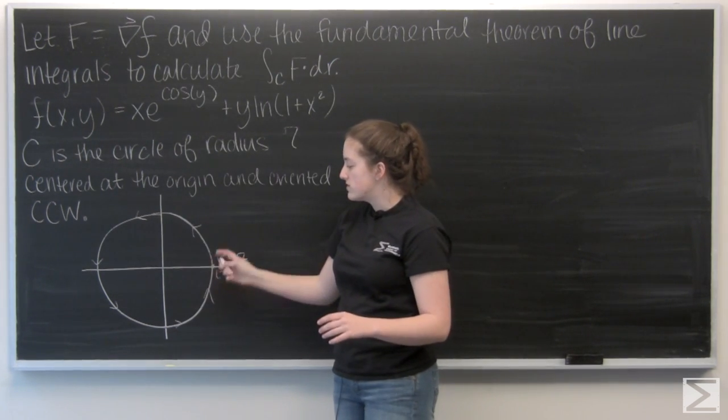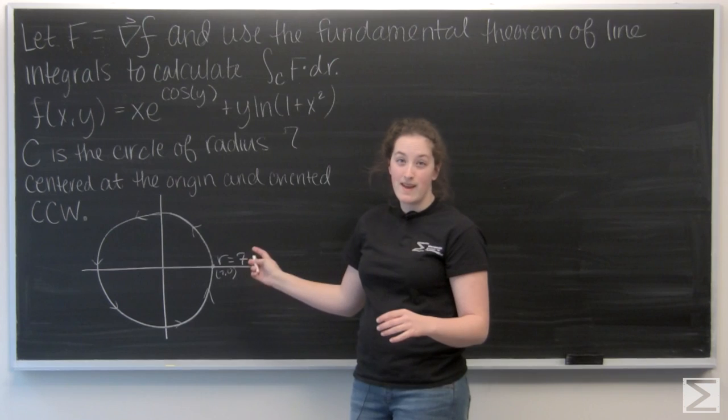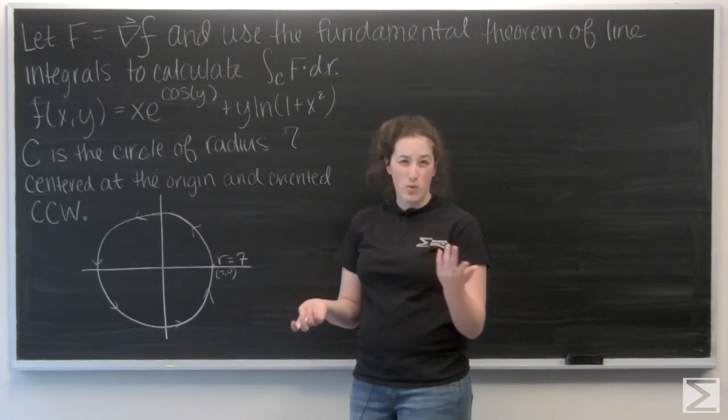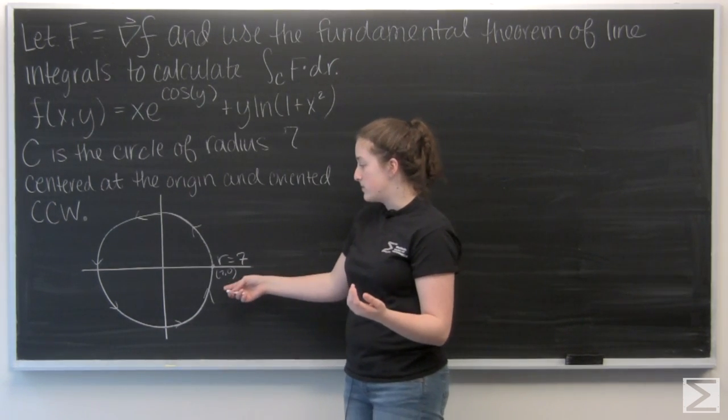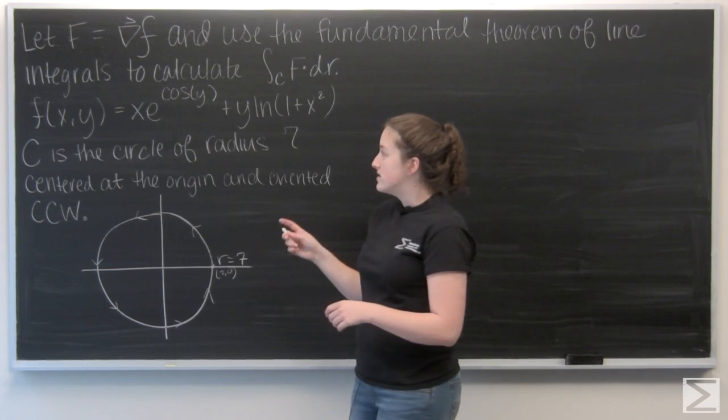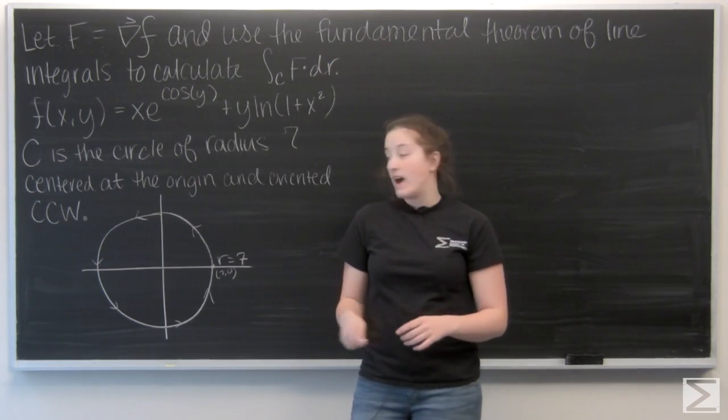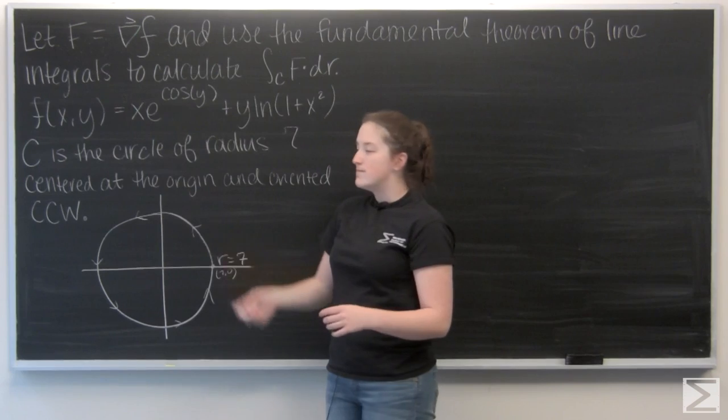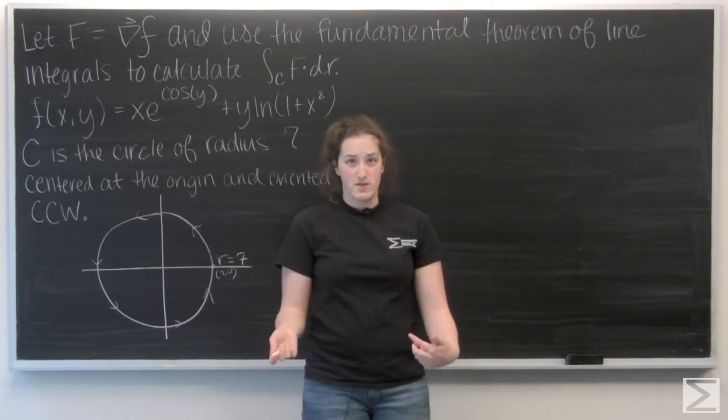But it's actually a closed curve. So the start value and the end value, or the points, are the same. So when I think about calculating this line integral, I'm going to have f of 7,0 minus f of 7,0, which is just going to be 0.